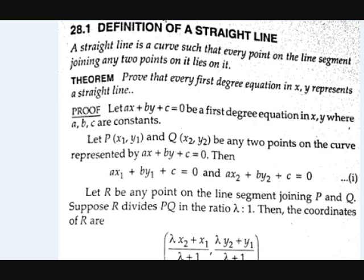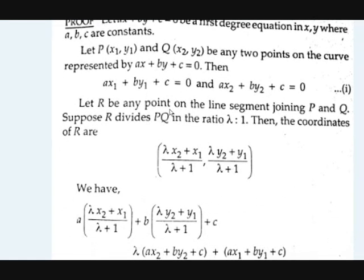Let's take two points X1, Y1 and X2, Y2. The equations will be as follows: AX1 + BY1 + C = 0 and AX2 + BY2 + C = 0. Now if we take a point in between, and let's take the ratio as lambda to 1. Here lambda is any constant — you can take A, B, C, or D, but let's take lambda for easy understanding. Let's find the coordinates of that point R.